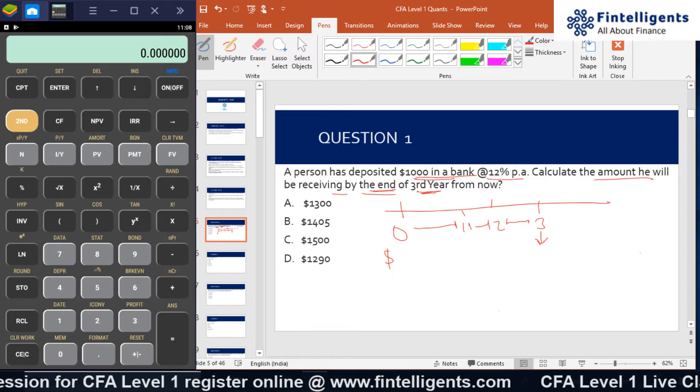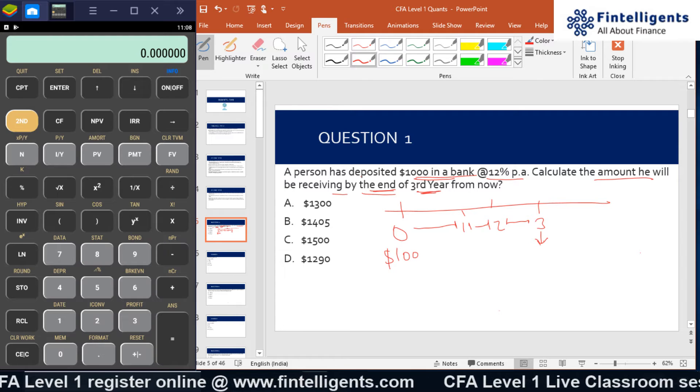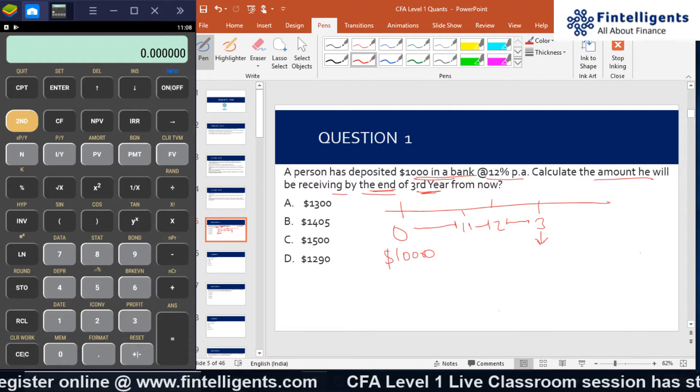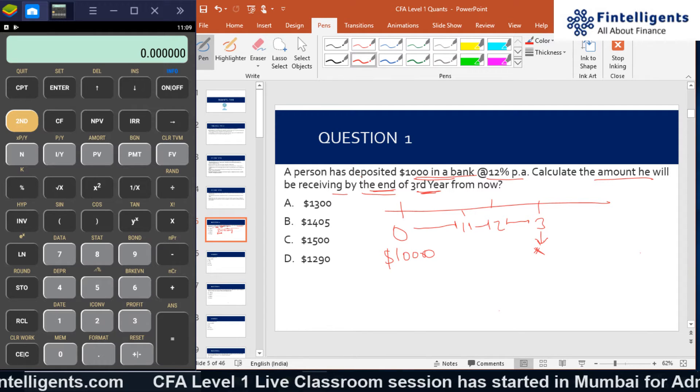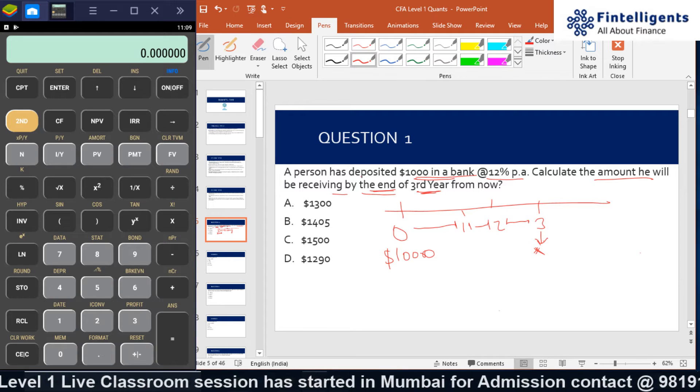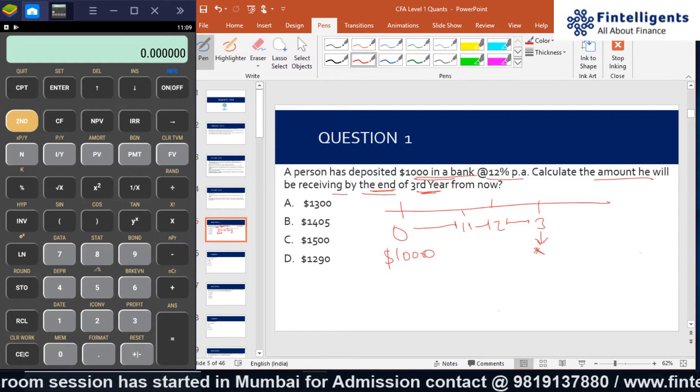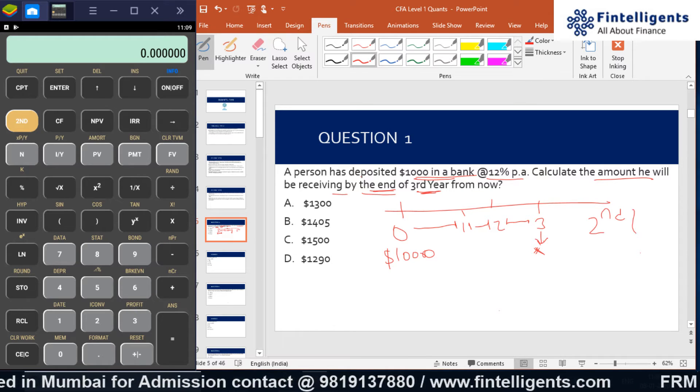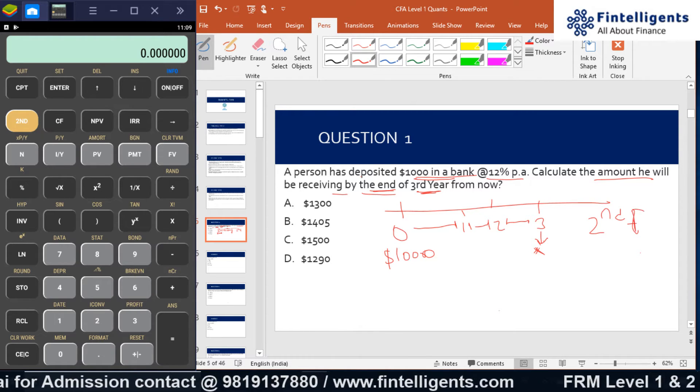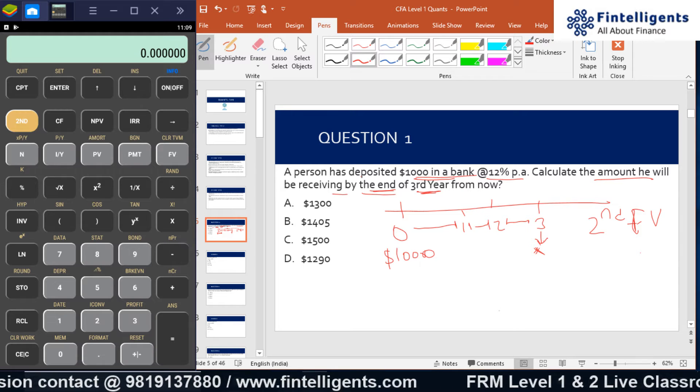That person has deposited $1000 in the bank today and wants to receive money at time 3. So how do we do it in the calculator? The first step that we normally do with the time value of money concept is second FV. This will clear out all our memory.